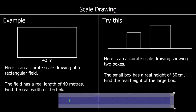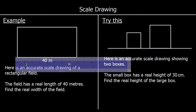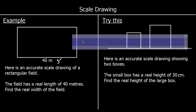Here's another question. We have an accurate scale drawing of a rectangular field. The real length of the field is 40 meters — what's the real width? We can measure the lengths on the drawing. We get 8 cm along, so on the drawing we have 8 cm. We can use that to work out a scale: 8 cm on the drawing is 40 meters in real life. If we divide both by 8, we find that 1 cm on the drawing is 5 meters in real life.